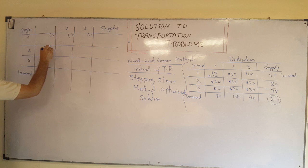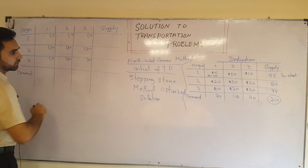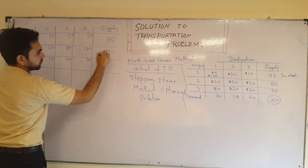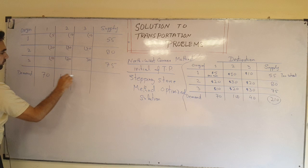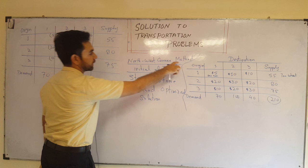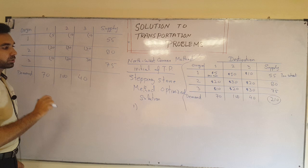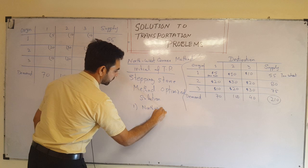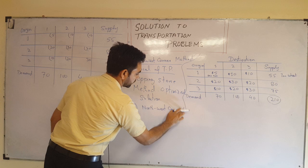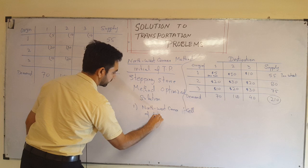The costs are: Origin 1 row — 5, 10, 10; Origin 2 row — 20, 30, 20; Origin 3 row — 10, 20, 30. Supply values are 55, 80, and 75. Demands are 70, 100, and 40. The rule of the Northwest Corner method is to first look for the northwest corner cell of the table — that is the top-left cell.